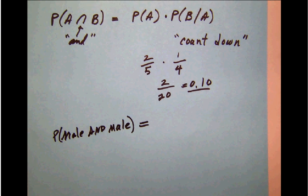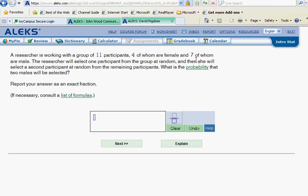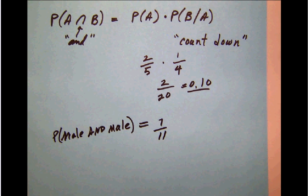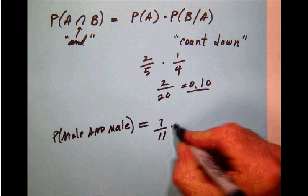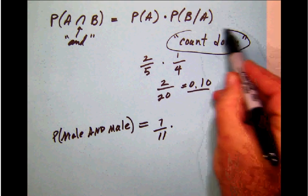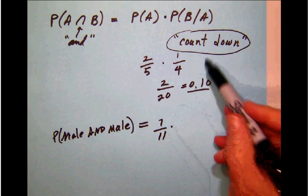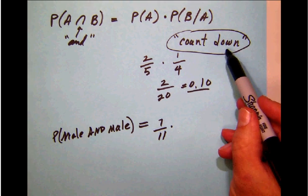We can see that there are 7 males, 11 participants, so that probability is going to be 7 out of 11 for our first draw. We're going to count down—we're going to take one of those males out.